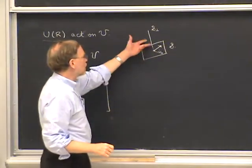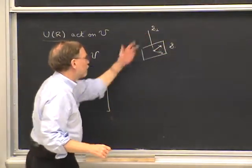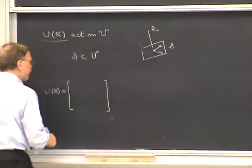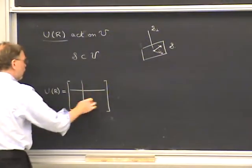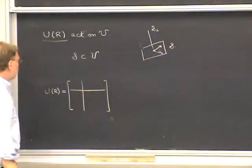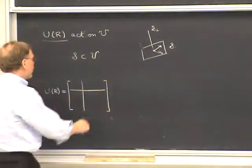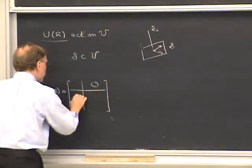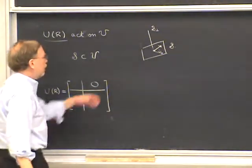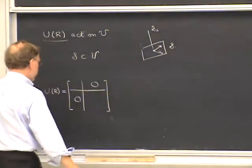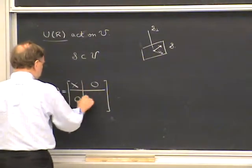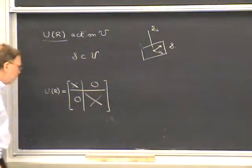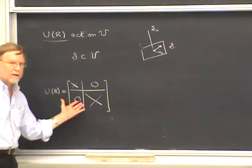One can show that if you have an invariant subspace, the orthogonal subspace is also invariant, because these are unitary operators. The result is that if you take an orthonormal basis in the subspace plus another orthonormal basis in the orthogonal space, the matrices representing our rotation operators U(R) have a block diagonal form. The dimensions of S and its orthogonal complement don't have to be the same, so I'll draw a small block and a large block — the off-diagonal blocks are all zero, while the diagonal blocks contain matrices which are generally not zero.